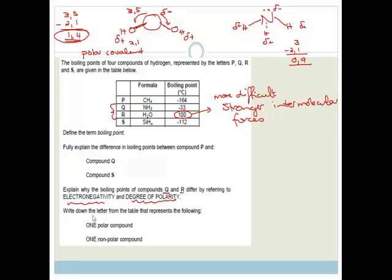Write down one letter from the table that represents a polar compound — that would be water (R, or H2O). A non-polar compound could be SiH4 (S) or CH4 (P). Note that although NH3 has bonds with only a 0.9 electronegativity difference making them essentially non-polar covalent, the molecule as a whole is slightly polar due to the lone pair making one end slightly negative and the hydrogens slightly positive.